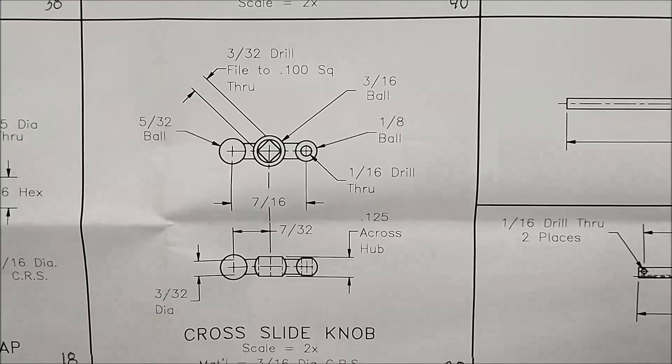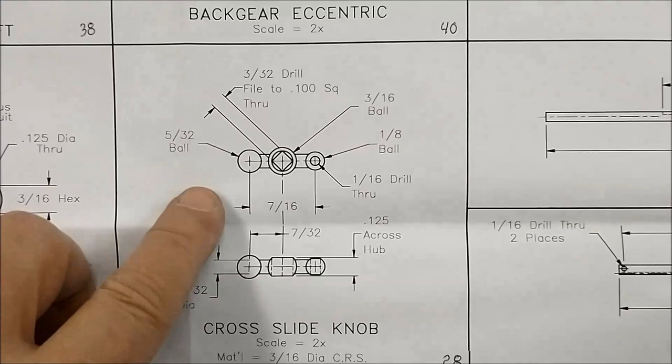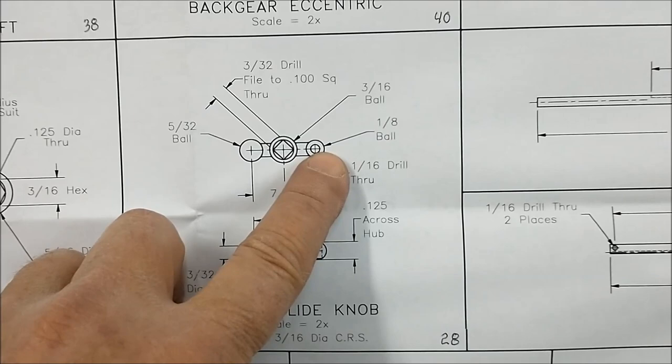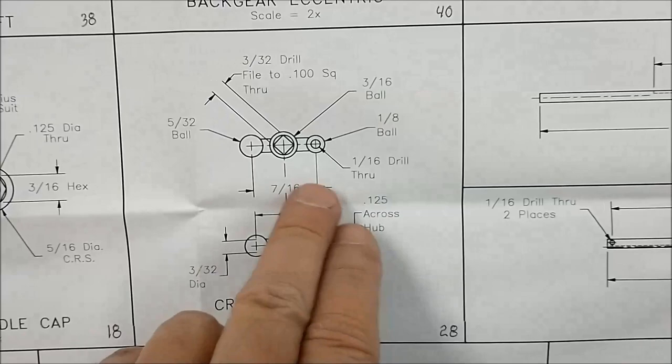The next piece I'm probably going to attack is the cross slide knob. I've heard this can be a bear to do, and I can see why if you look at how it's laid out. You have a 5/32nds ball on the end, 3/16ths in the center, and a 1/8th on the end on this side, and a square through the middle.